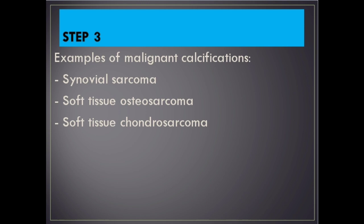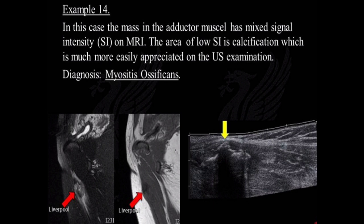Example 14: In this case, the mass in the adductor muscle has mixed signal intensity on MRI. The area of low signal intensity is calcification, which is much more easily appreciated on the ultrasound examination. Diagnosis: myositis ossificans.